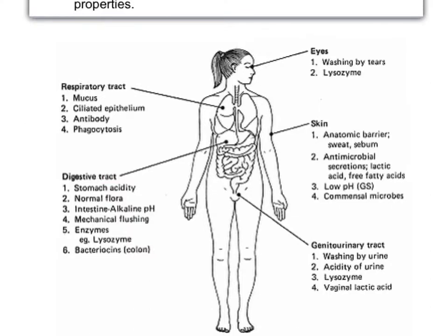The digestive tract also has mucus — the mouth and oesophagus have mucus, and in the stomach there is a particular type of mucus which is highly acidic and antimicrobial. The genitourinary tract is protected by urine itself being antimicrobial, with the constant washing of urine through the tract, and also the acids produced by secretions in the vagina. Those are all examples of primary defences against disease.